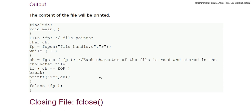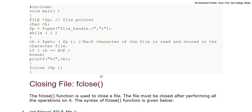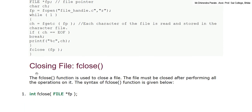If we want to close the file after it has been opened, we use the fclose function. The fclose function is used to close a file. The file must be closed after performing all the operations on it. The syntax of the fclose function is: int fclose(FILE *fp).